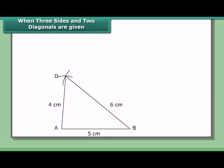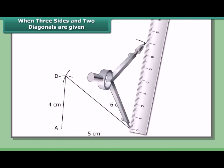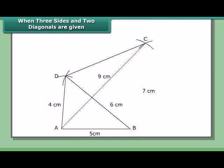Join AD and BD. With A and B as centers and 9 cm and 7 cm as radii respectively, draw arcs to cut each other at C. Join AC and BC. Also join DC. ABCD is the required quadrilateral.